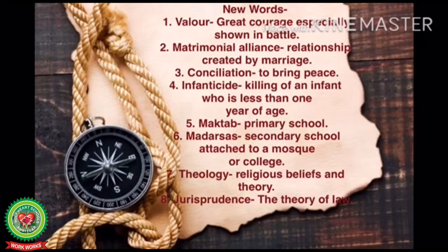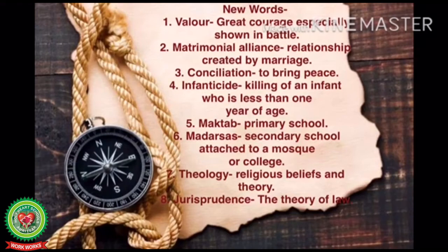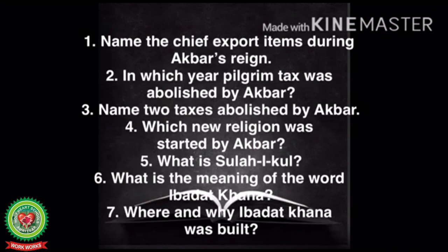Number two, 'matrimonial alliance' means a relationship created by marriage. Number three, 'conciliation' means to bring peace. Number four, 'infanticide' means killing of an infant who is less than one year of age. Number five, 'maktab' is a primary school attached to a mosque. Number six, 'madrasa' is a secondary school or college. Number seven, 'theology' means religious belief and theory. Number eight, 'jurisprudence' means the theory of law.